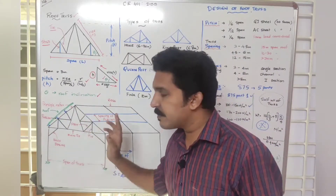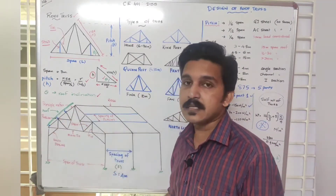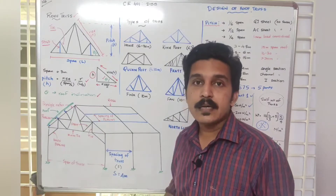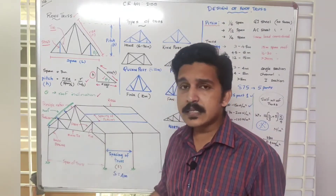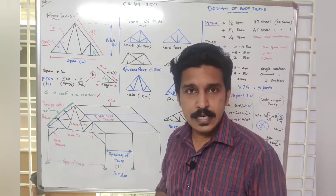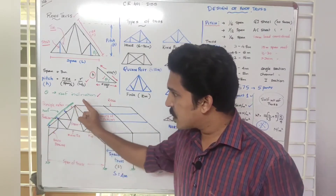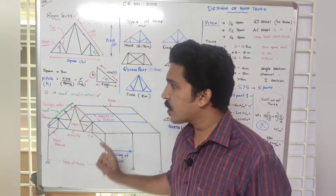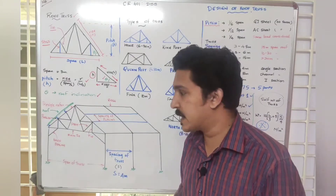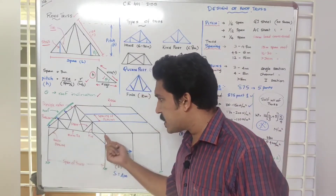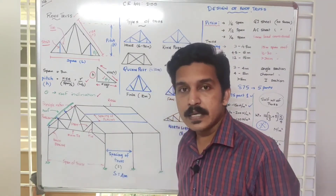The parts of a large span roof truss include: tie members, top chord (also called the principal rafter), and the bottom chord (also called the main tie or principal tie).